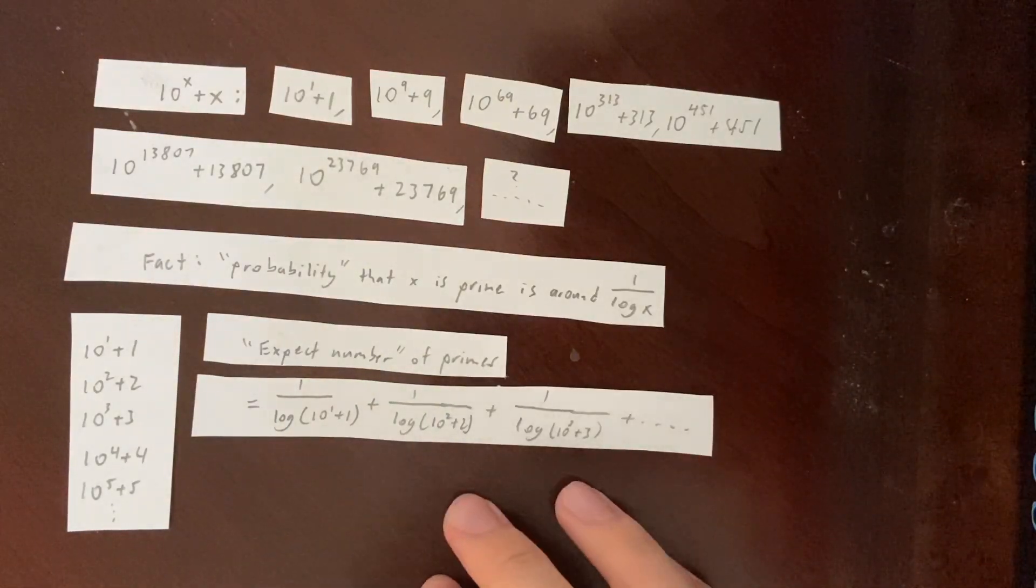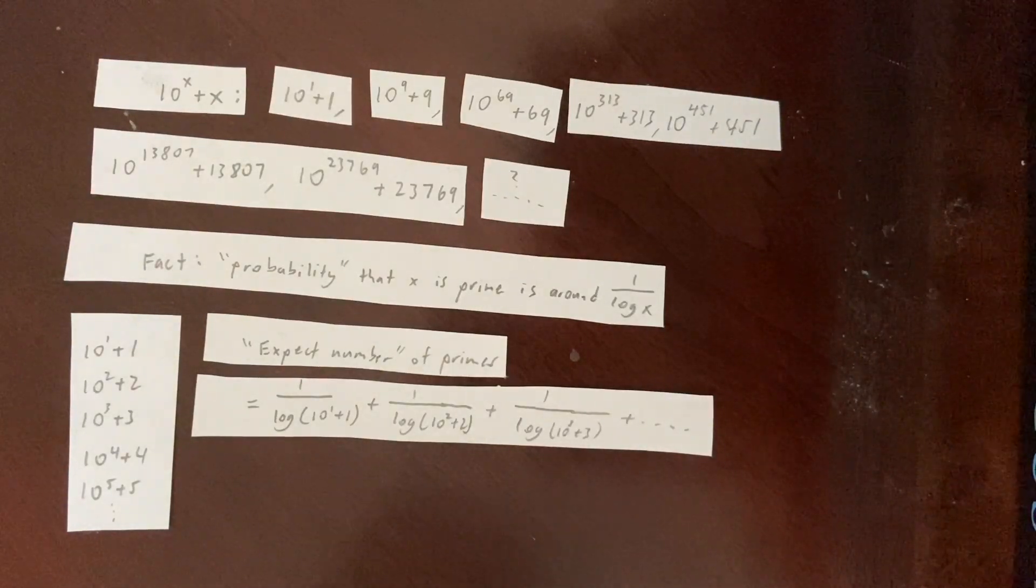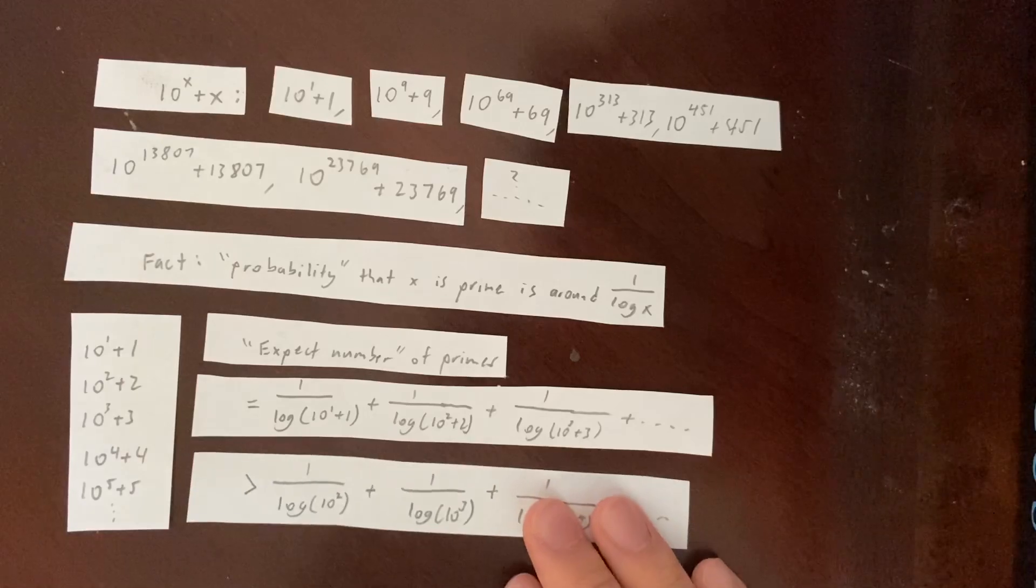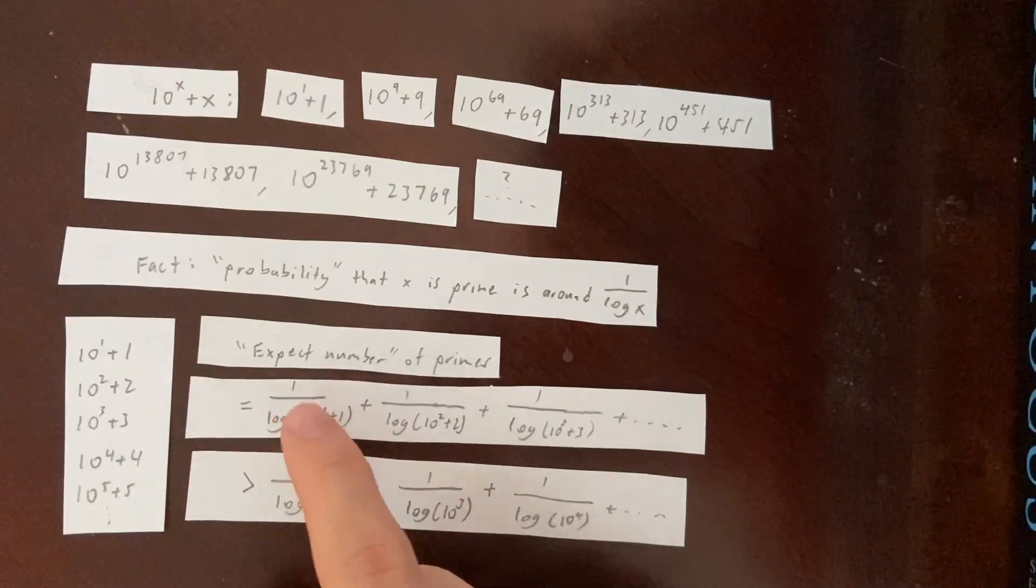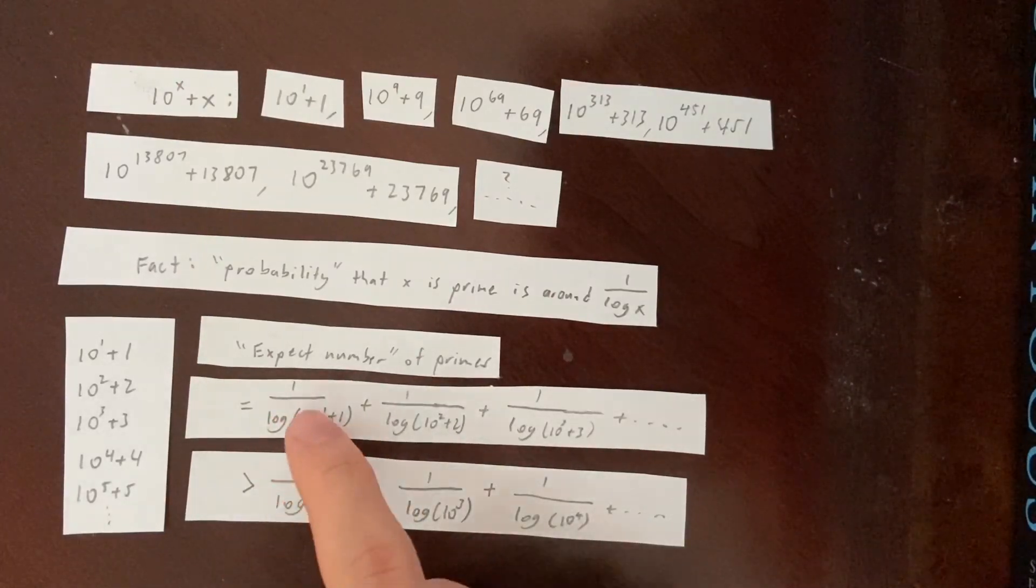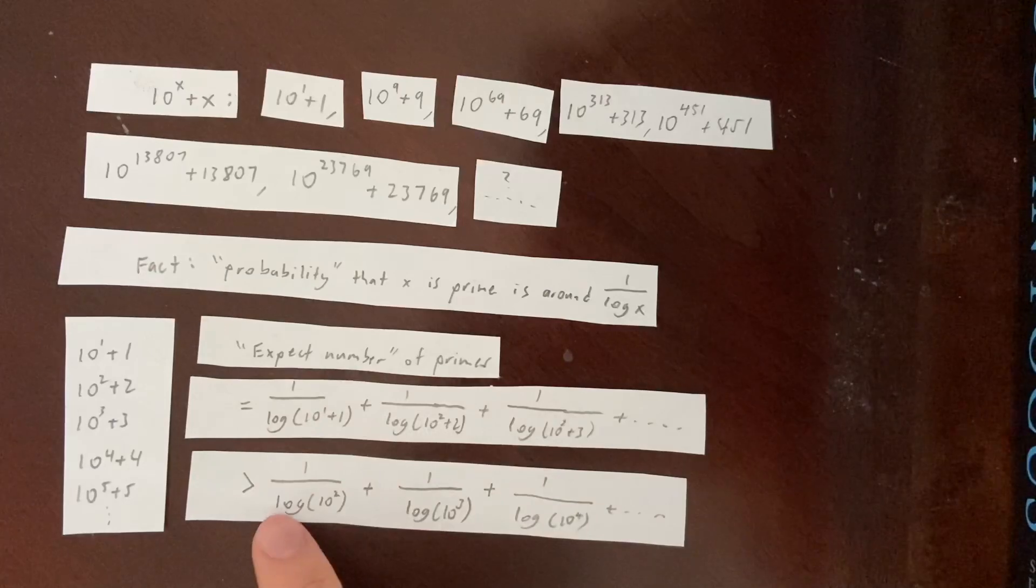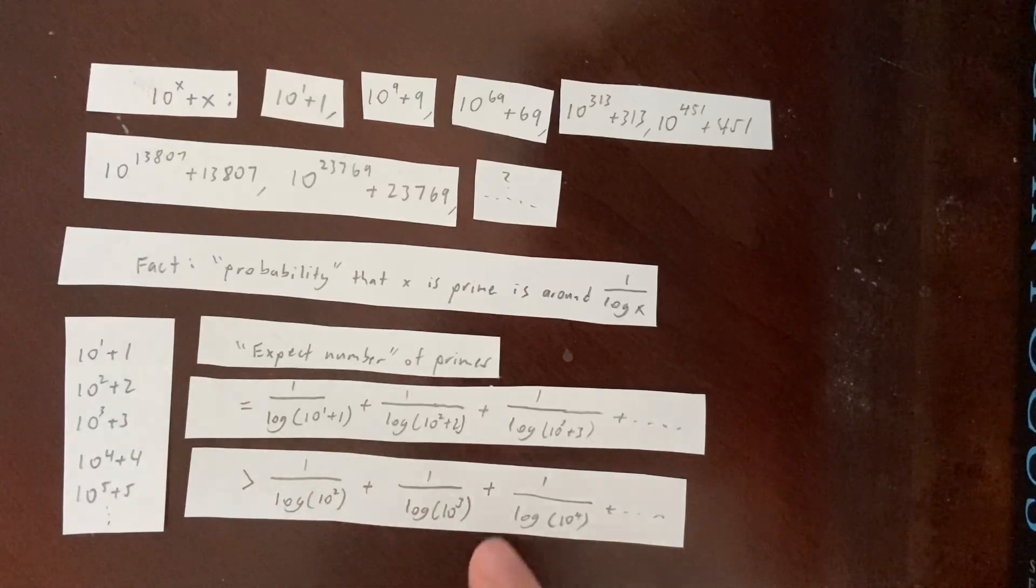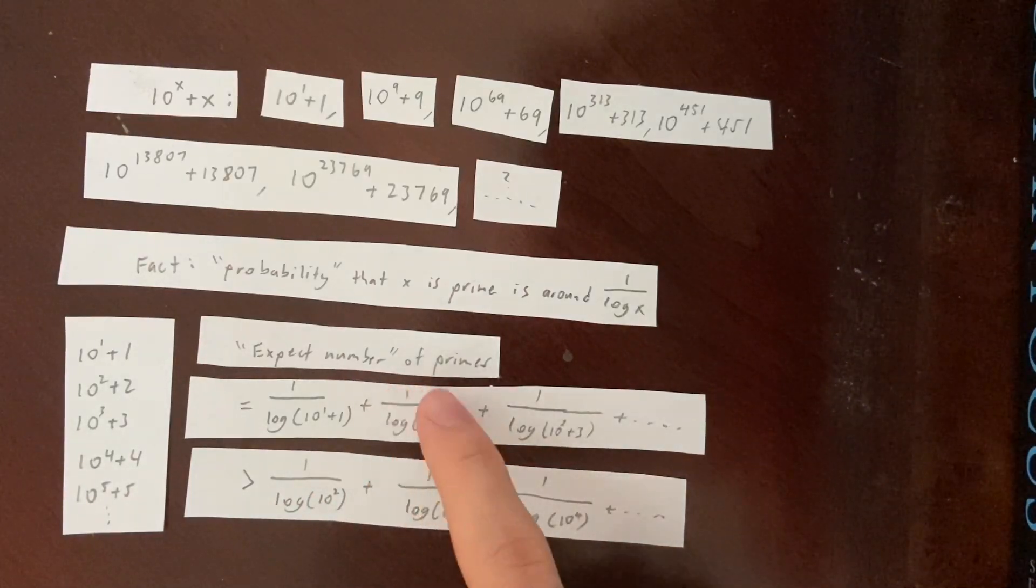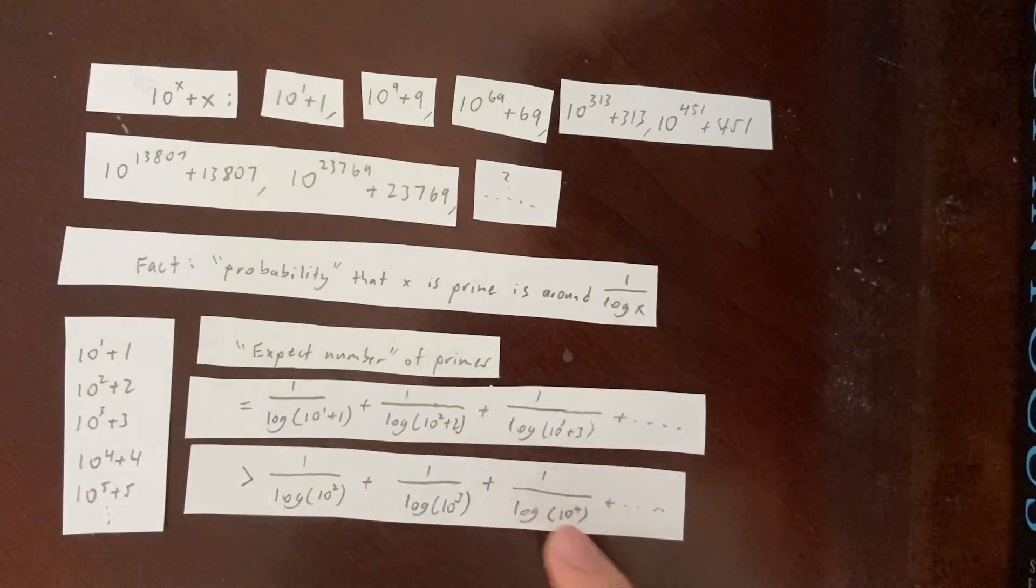Well, the way that we show this is something called a series comparison test. So we're going to compare each term in here with another term, like so. I noticed that this first term, 1 over log of 10 to the 1 plus 1, is greater than this term here, 1 over log of 10 squared, because this denominator here is less than the denominator here. So this fraction is greater than this fraction. And the same thing is true for this term, this second term is greater than this term, this third term is greater than this third term, and so on. So that means that this series is greater than this series.